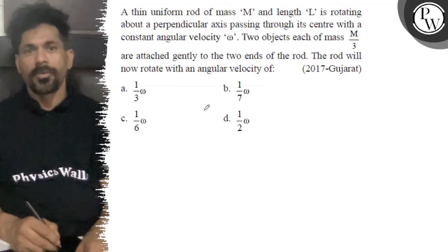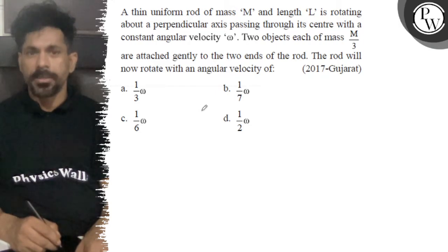Hello, let's see the question. A thin uniform rod of mass capital M and length capital L is rotating about a perpendicular axis passing through its center with constant angular velocity omega.